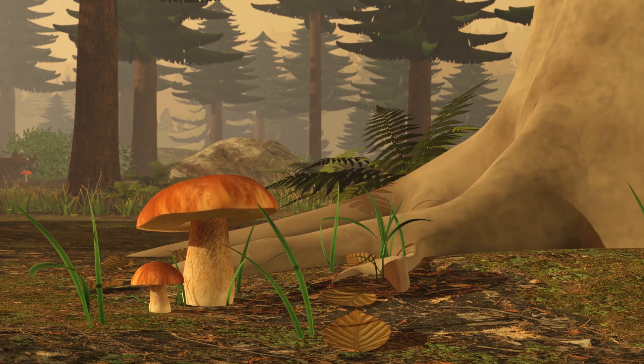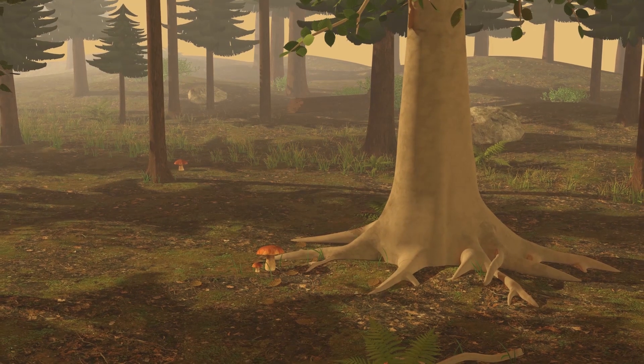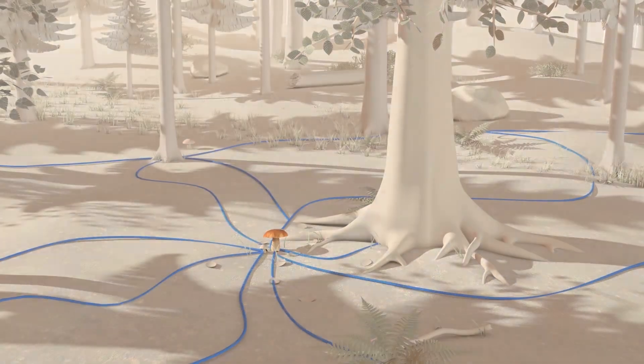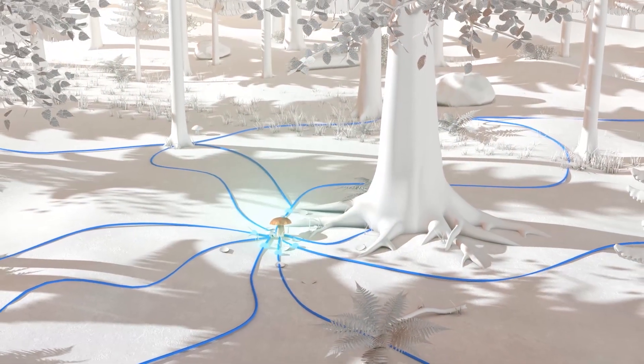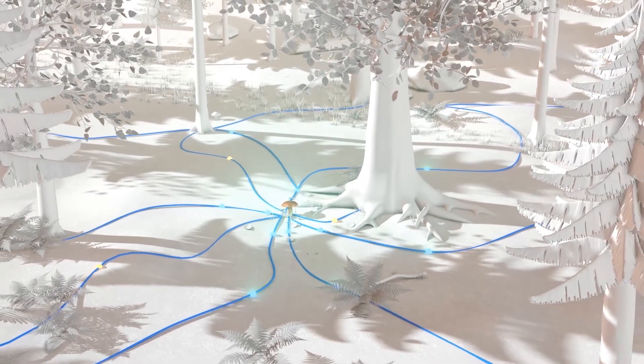In the root system of a tree, there can be more than 30 types of mycorrhiza fungi. They create a network between the trees. Via this fungal connection, a strong tree can supply its weaker neighbors with nutrients.